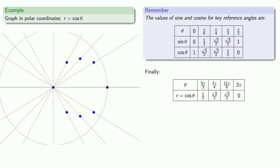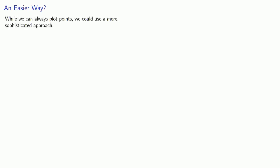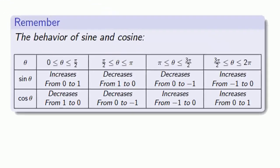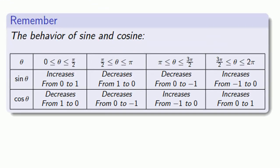That means our graph is going to look something like this as we connect the dots. All human progress comes from somebody asking, isn't there an easier way of doing this? While we can always plot points, we could use a more sophisticated approach based on the behavior of sine and cosine.